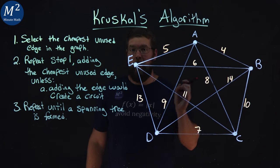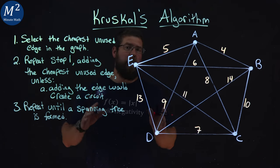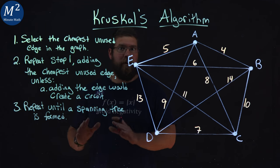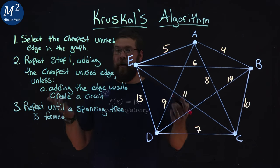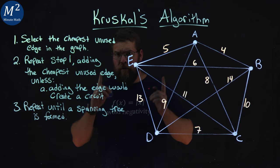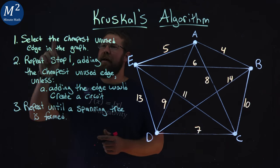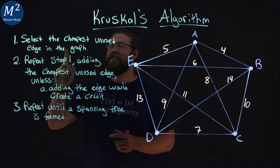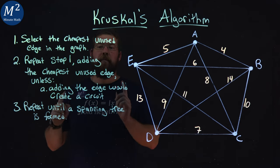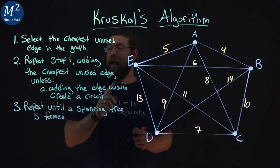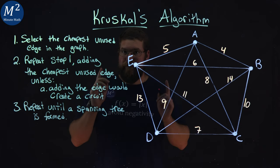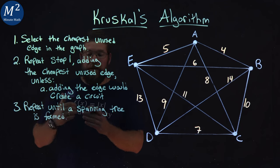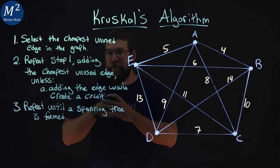Let's learn about Kruskal's algorithm. Kruskal's algorithm will always produce for us a minimum cost spanning tree on a graph and it's very efficient at doing so. So let's go over the steps. One, select the cheapest unused edge in the graph. Step two, repeat step one, adding the cheapest unused edge unless adding the edge would create a circuit. Then step three, repeat until a spanning tree is formed.